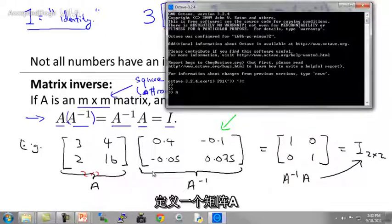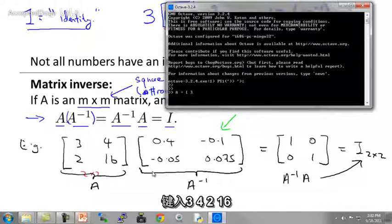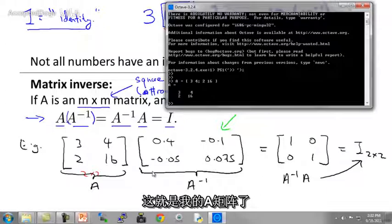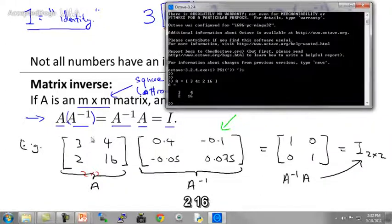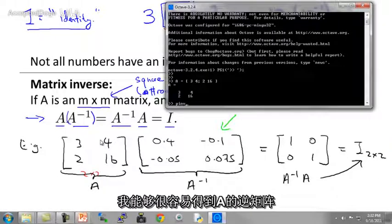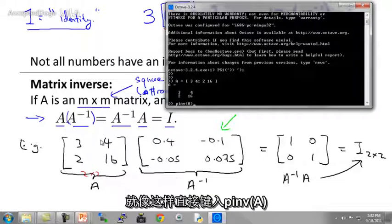Let me just quickly show you an example. I'm going to set my matrix A to be equal to that matrix on the left. So I'm going to type [3, 4; 2, 16]. So that's my matrix A, this matrix [3, 4; 2, 16] that I have down here on the left. And the software lets me compute the inverse of A very easily.